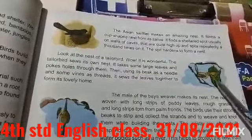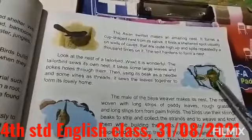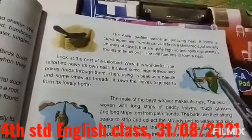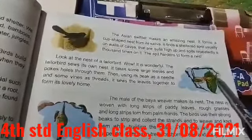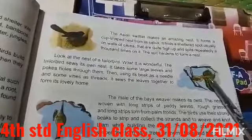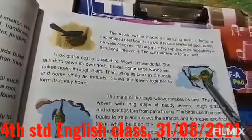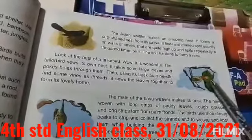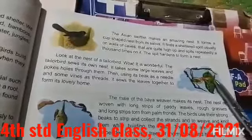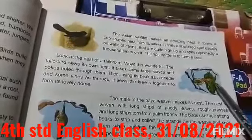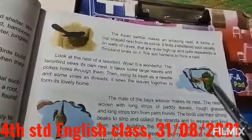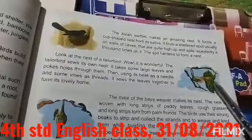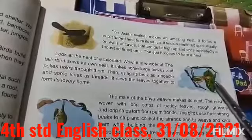Look here at how the Tailor bird builds its nest. It takes large, big leaves and uses its beak as a needle. The veins in the leaves are used as threads — these are the veins present in the leaves.